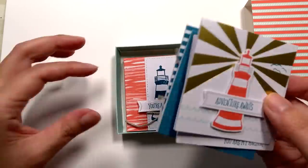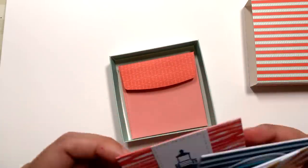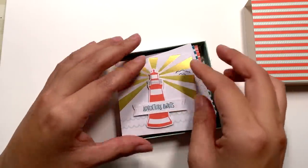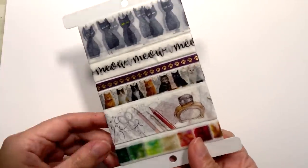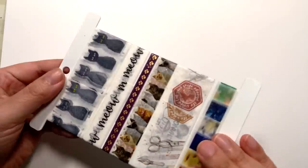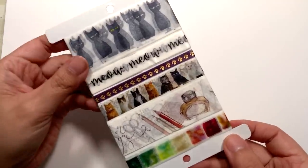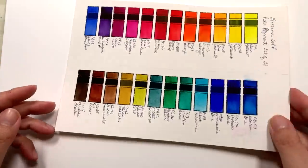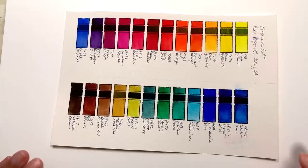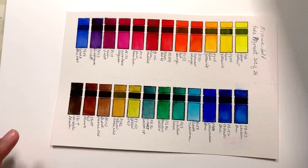So thank you so much for sending me these beautiful handmade cards. She also sent me a ton of washi tapes with lots of cats on it, which I absolutely love. So thank you so much. And then she sent me the Mission Gold Pure Pigment Set of 24 colors as a sample.